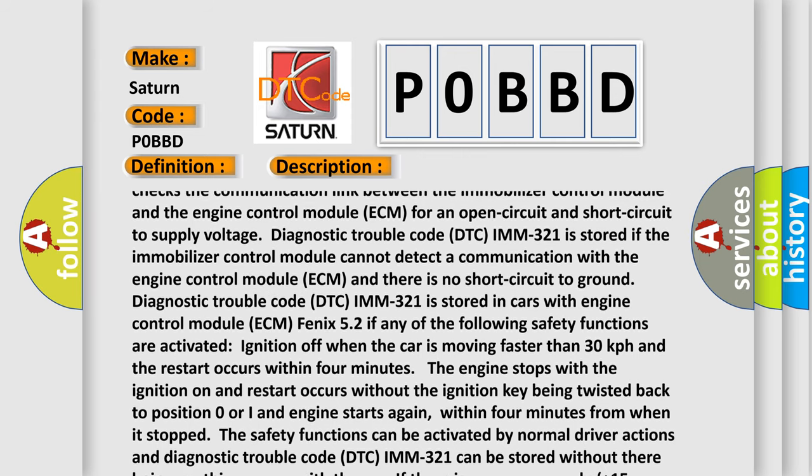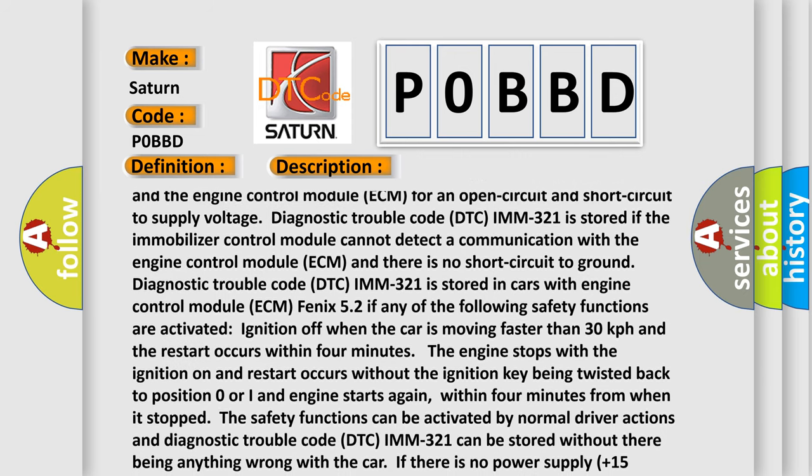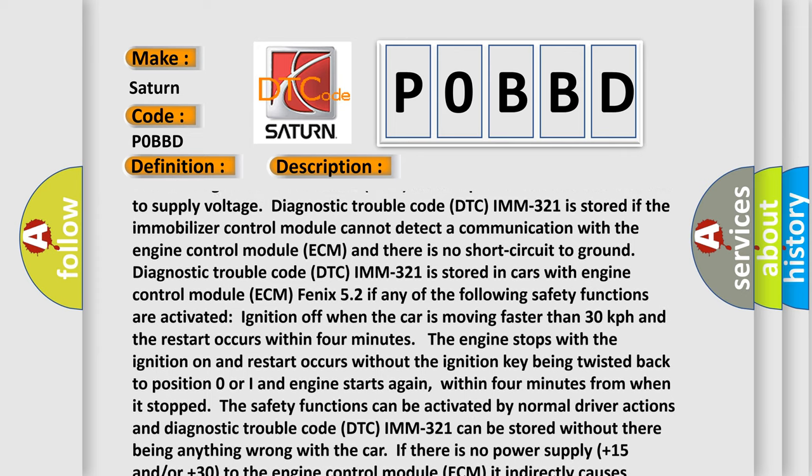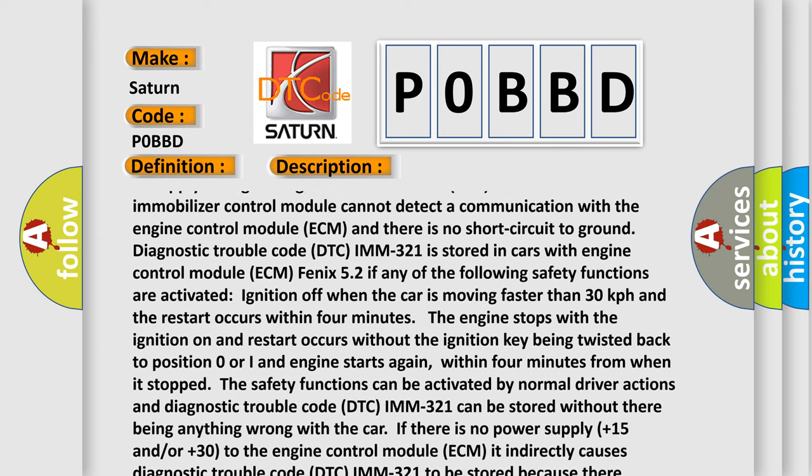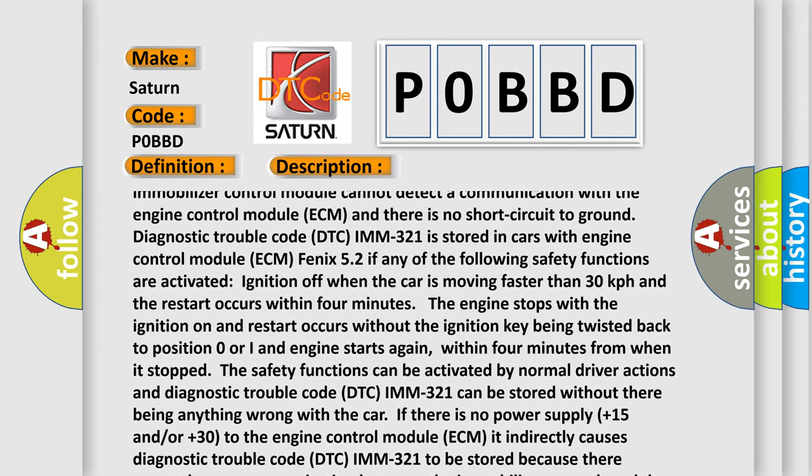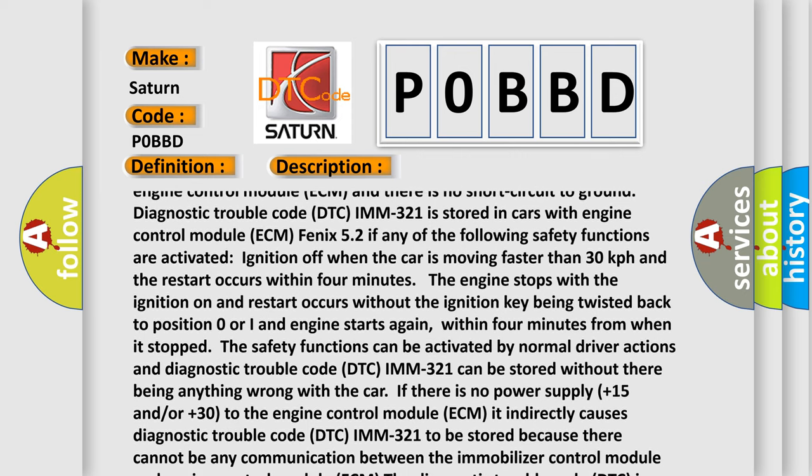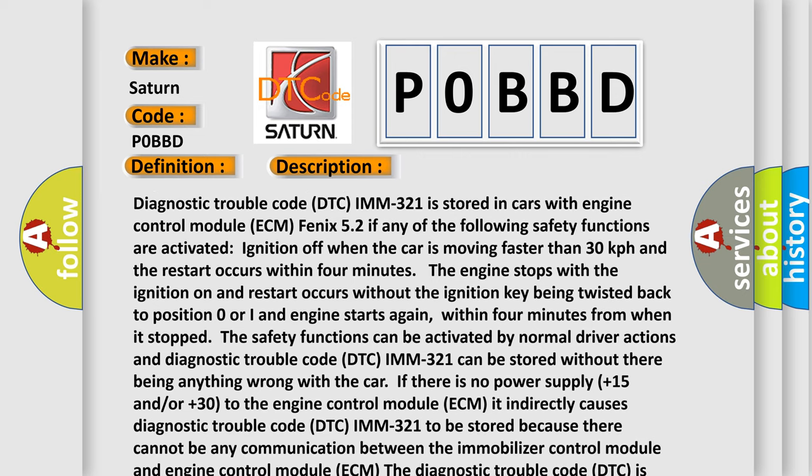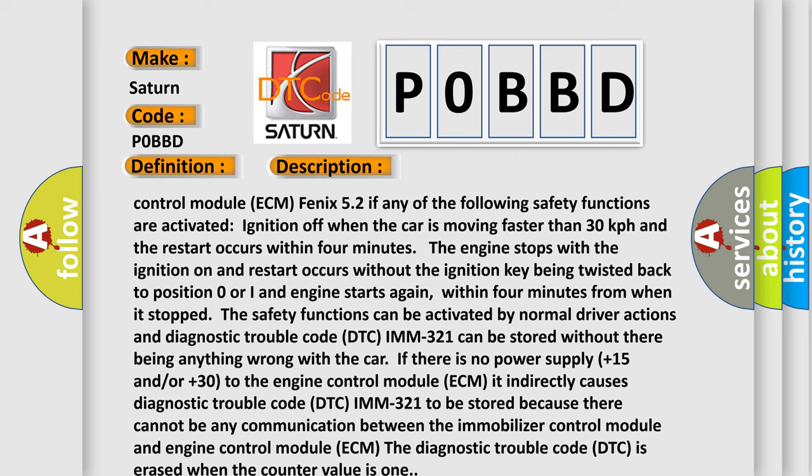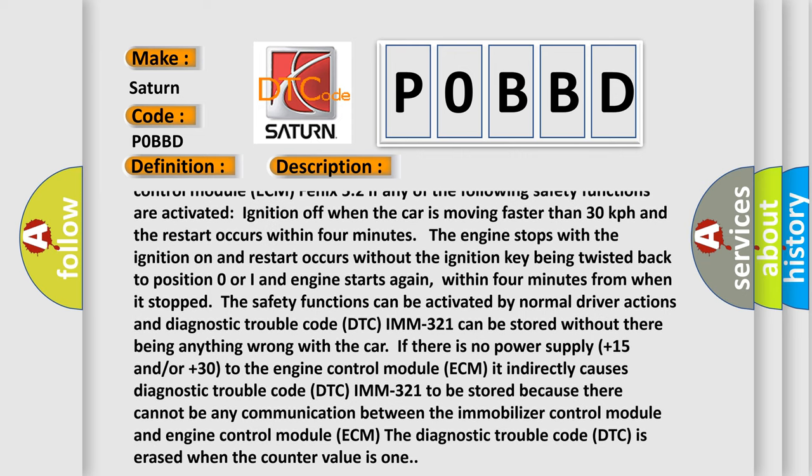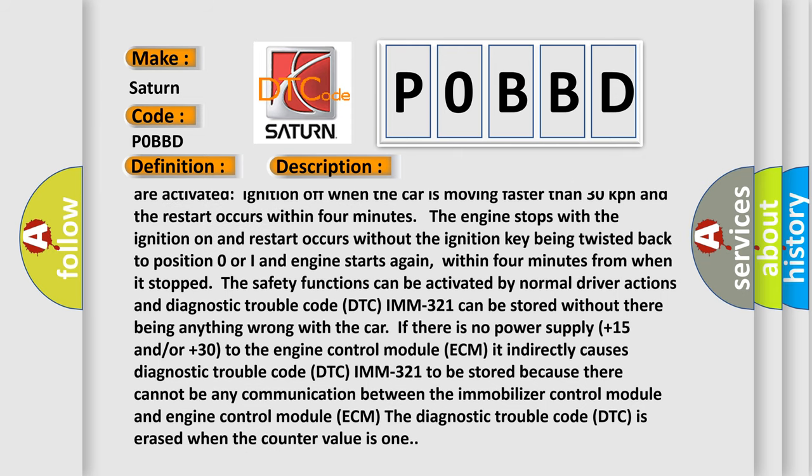Diagnostic trouble code DTC IMM-321 is stored in cars with engine control module ECM Phoenix 5.2 if any of the following safety functions are activated: Ignition off when the car is moving faster than 30 kilometers per hour and the restart occurs within 4 minutes; the engine stops with the ignition on and restart occurs without the ignition key being twisted back to position zero or one; engine starts again within 4 minutes from when it stopped. The safety functions can be activated by normal driver actions and diagnostic trouble code DTC IMM-321 can be stored without there being anything wrong with the car.